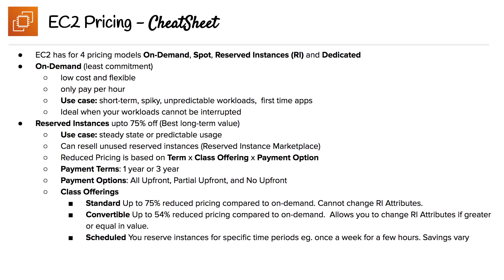For standard, you get up to 75% reduced pricing compared to on-demand, but you cannot change the instance attributes — meaning if you want to change to a larger instance type, that's not possible; you're stuck with what you have. If you want more flexibility, convertible offers up to 54% off, and you can change those attributes as long as the new attributes are greater than or equal in value.